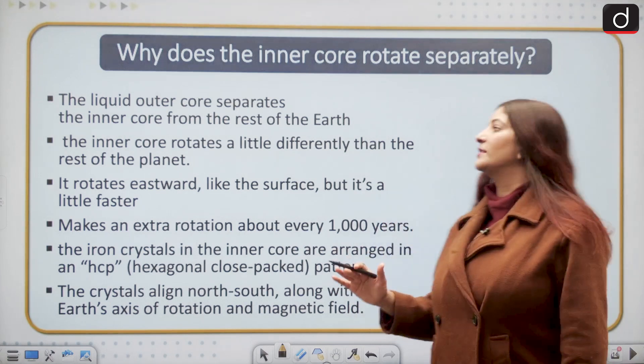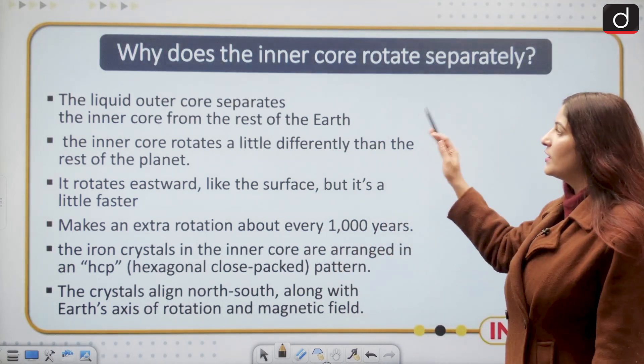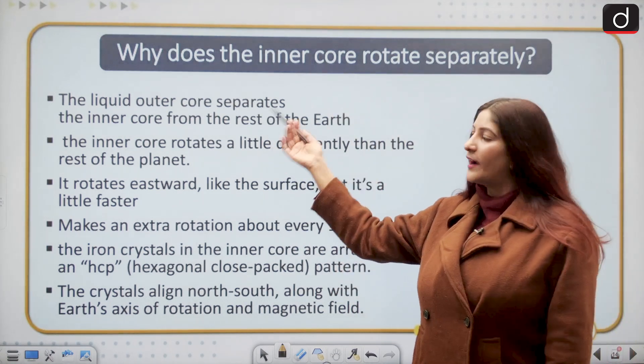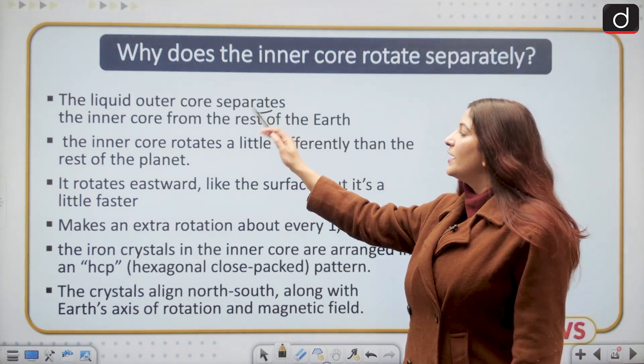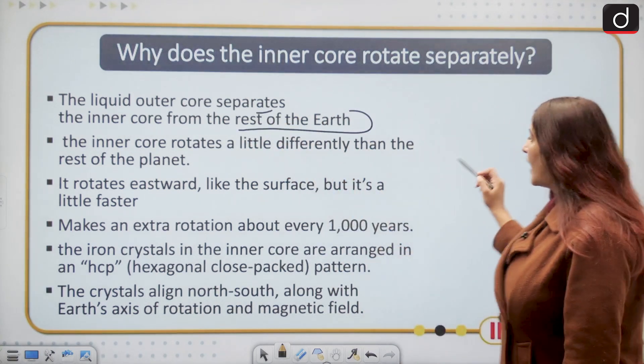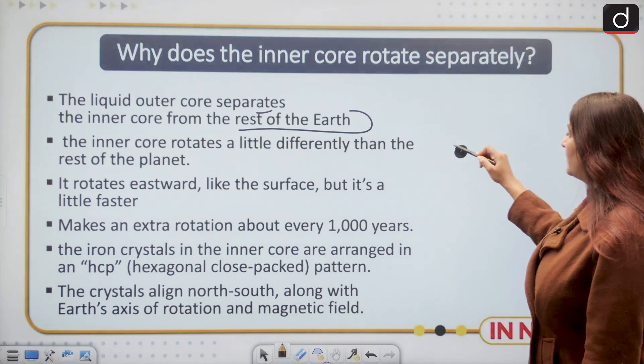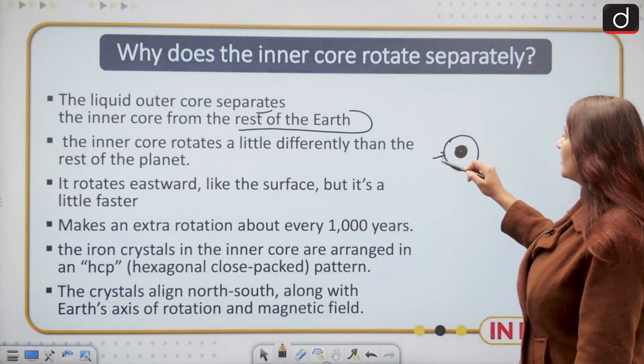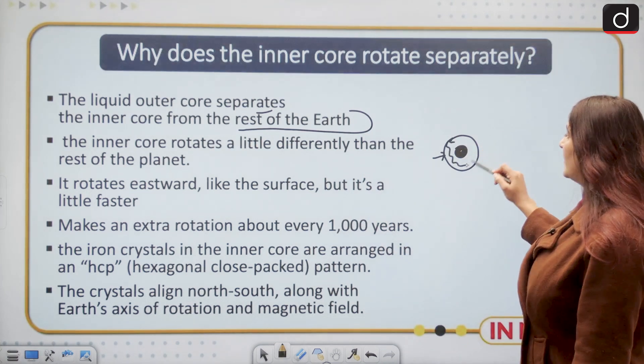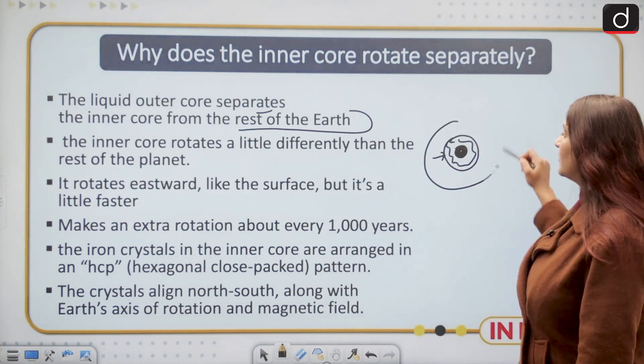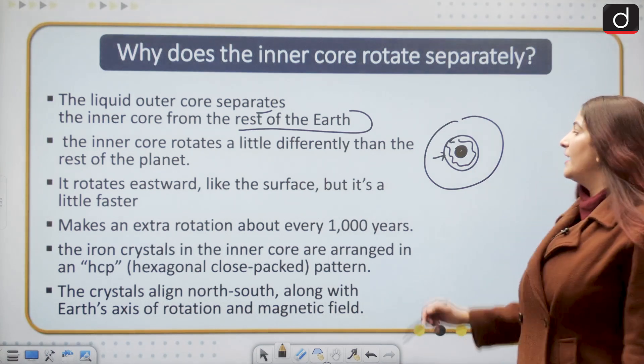So these are just theories in nature. The liquid outer core separates the inner core from the rest of the earth. This particular outer core is liquid in nature and it differentiates between the other layers and the inner core.